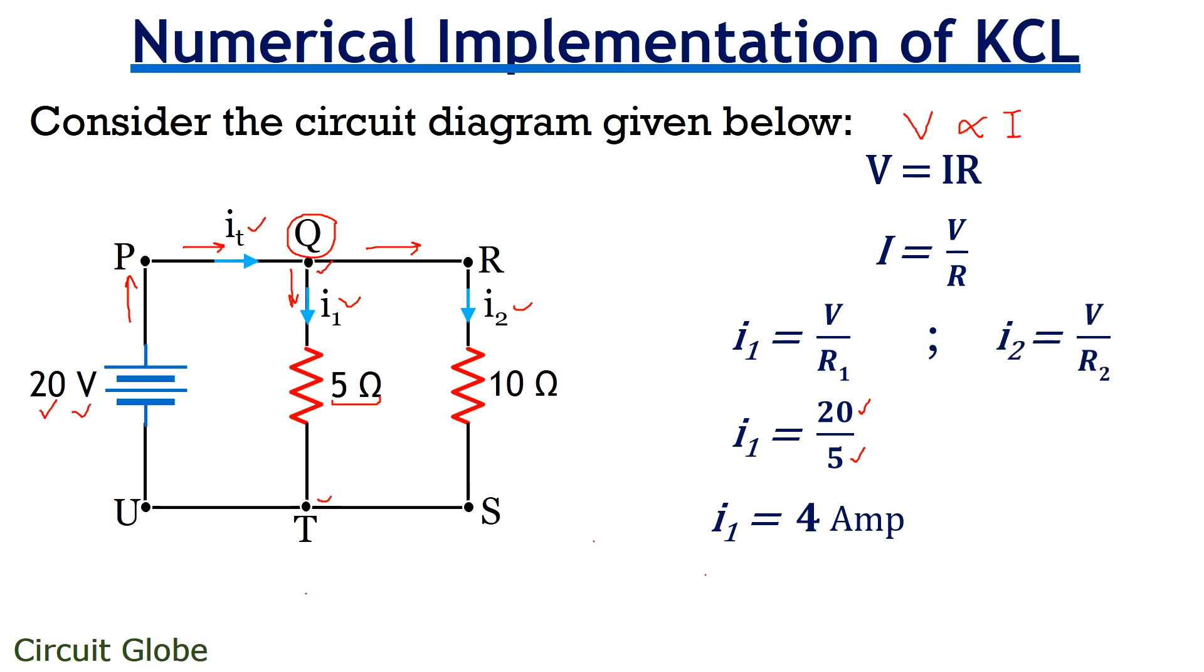In a similar way, when we substitute the value of I2, we will get I2 is equals to V upon R2. The potential is again 20 volts and the resistor is now 10 ohms in this particular branch. So, we get I2 is equals to 20 upon 10. And therefore, I2 will be 2 amperes.